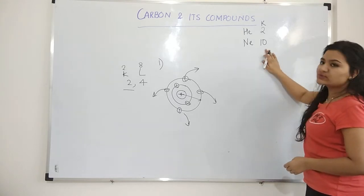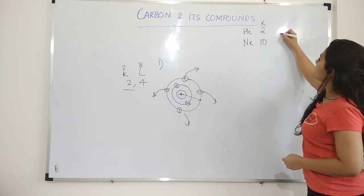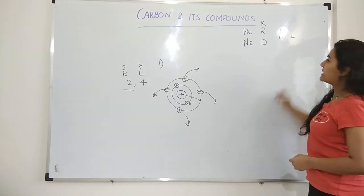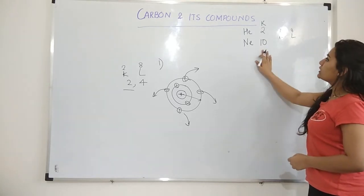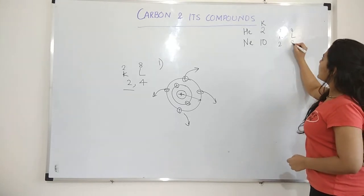This has, this will have 10 electrons. And how will you distribute those electrons? Into K and L shells. K shell has capacity of 2. L shell has capacity of 8. Now out of 10, if I keep 2 here, 8 will obviously go in L shell.